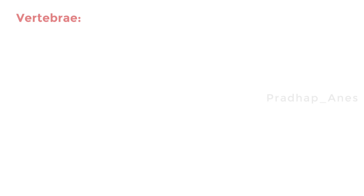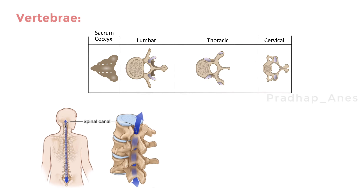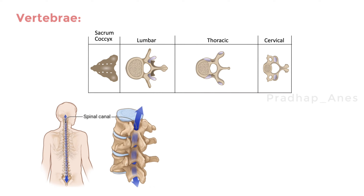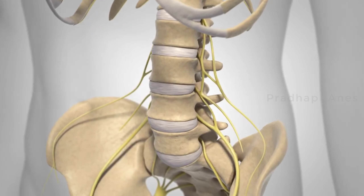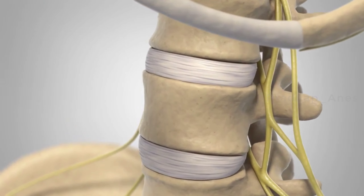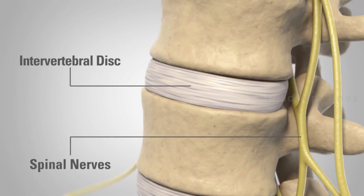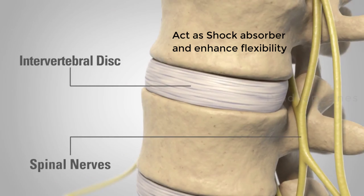These vertebrae come in different shapes and sizes. They have a bony arch that encloses the spinal canal, creating a protective housing for the spinal cord. These bones are interconnected by intervertebral discs, which act as shock absorbers and enhance flexibility.